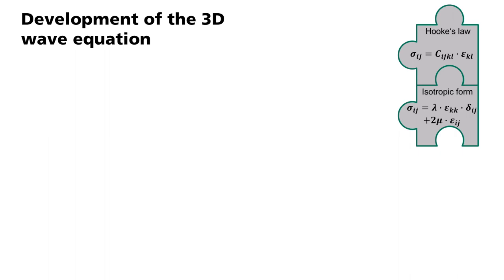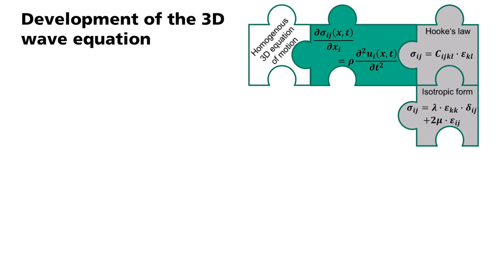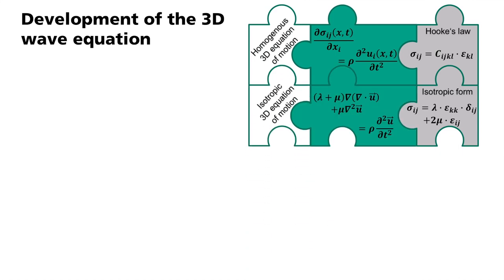This state equation will be inserted into the homogeneous 3D equation of motion in the next step. It is similar to the equation of motion in 1D and describes a propagating wave without taking into consideration the stimulating force, that means far away from the seismic source. This combination allows the equation of motion to be formulated using displacement terms. The many nabla operators, put simply, stand for the spatial derivations in 3D.